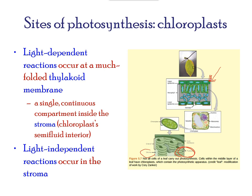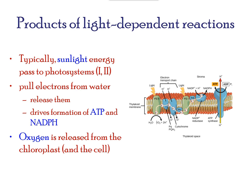Within the light-dependent reactions, photosystems are a series of reactions that pull electrons from water and then release them. These electrons are then trapped into forming ATP and NADPH. Oxygen is released during these series of reactions and leaves the cell.